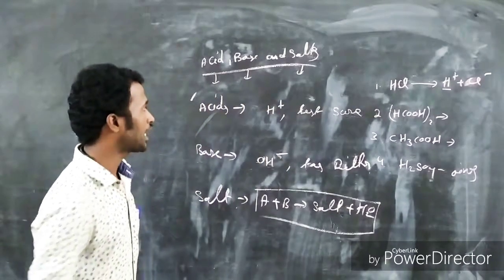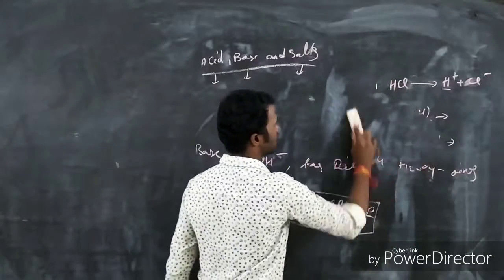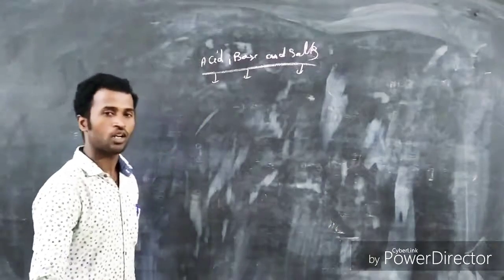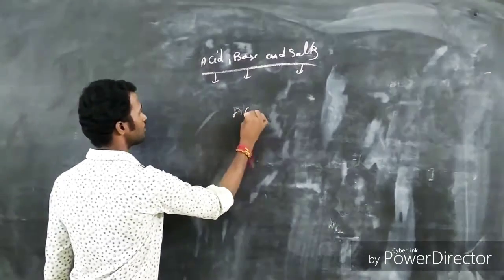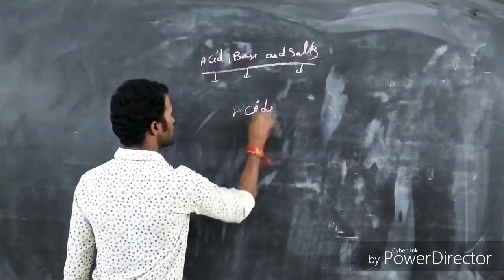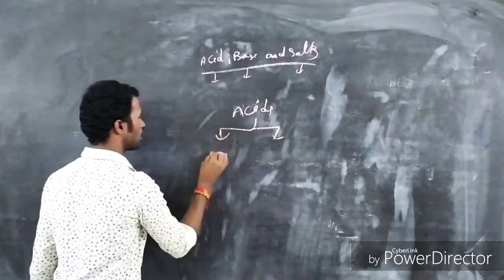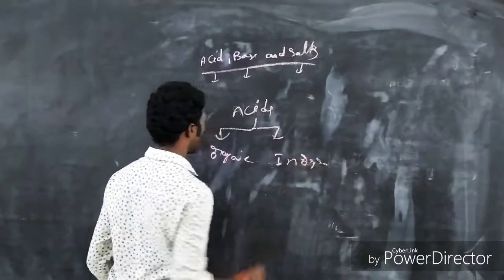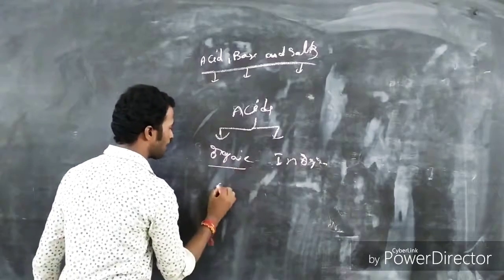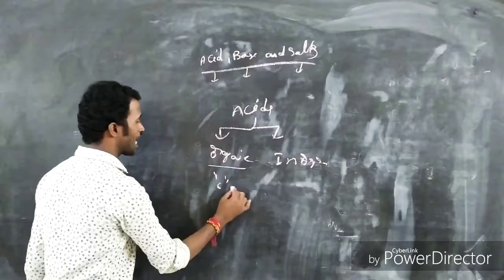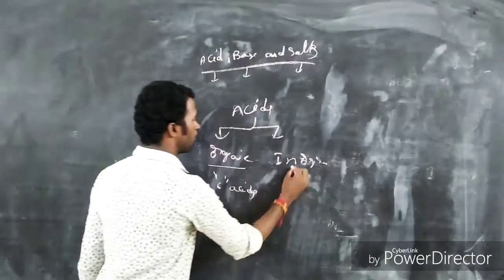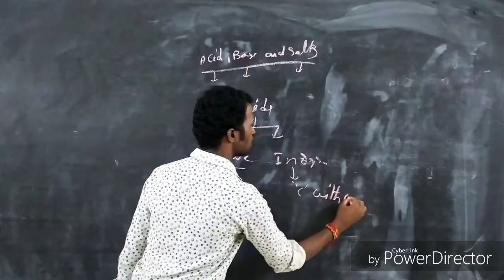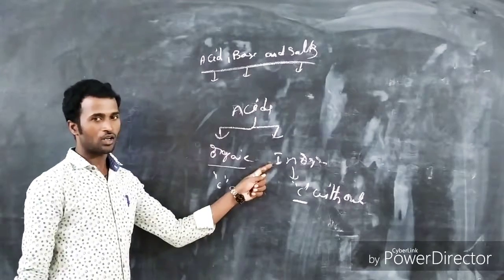Now let's examine the types of acids. Acids are classified into two types based on their compound nature: organic acids and inorganic acids. Organic acids are those that contain carbon atoms. Inorganic acids are those that do not contain carbon atoms.